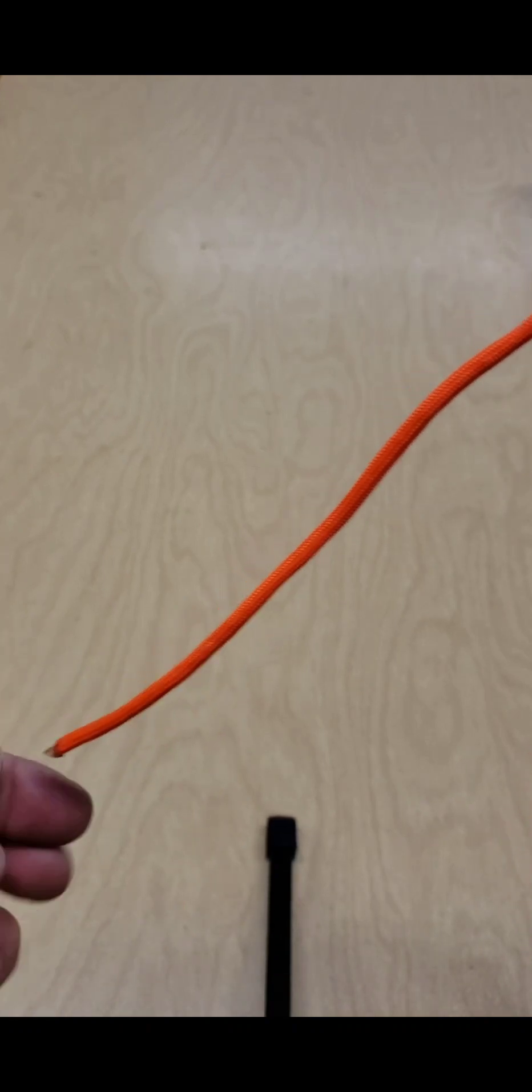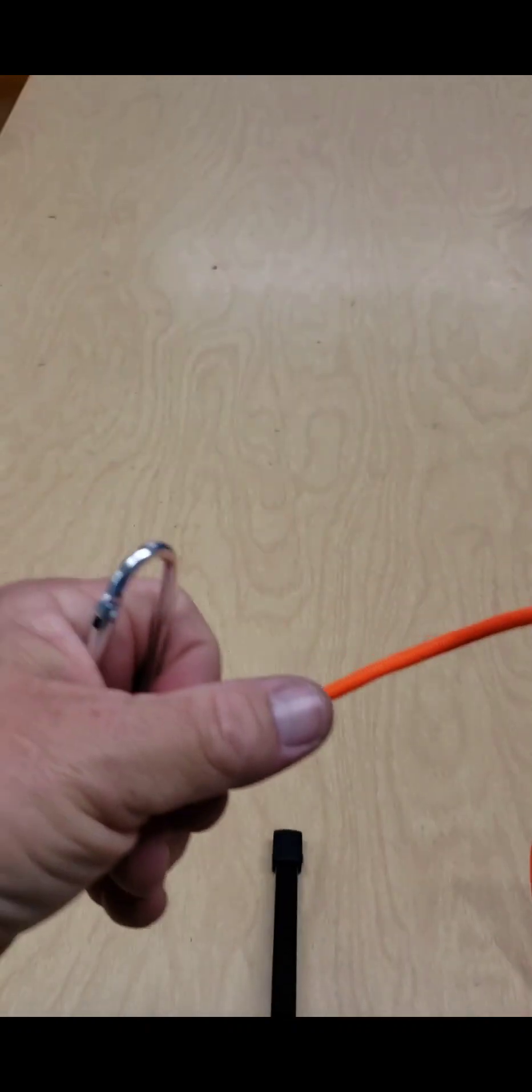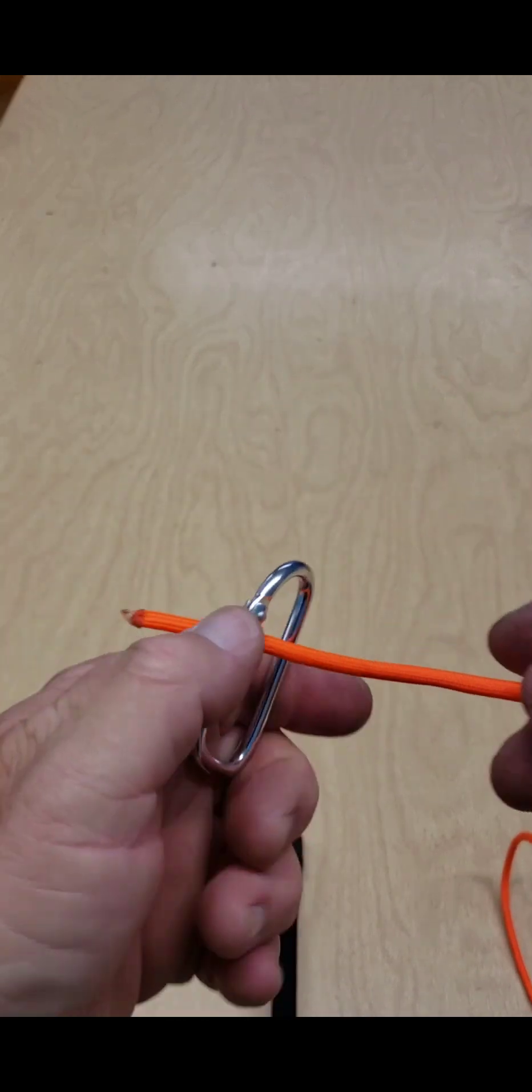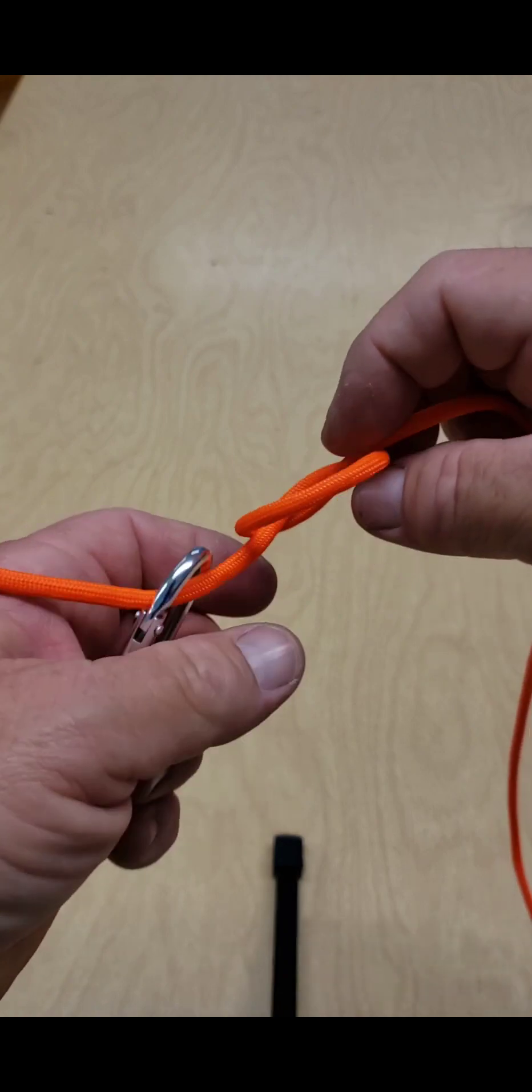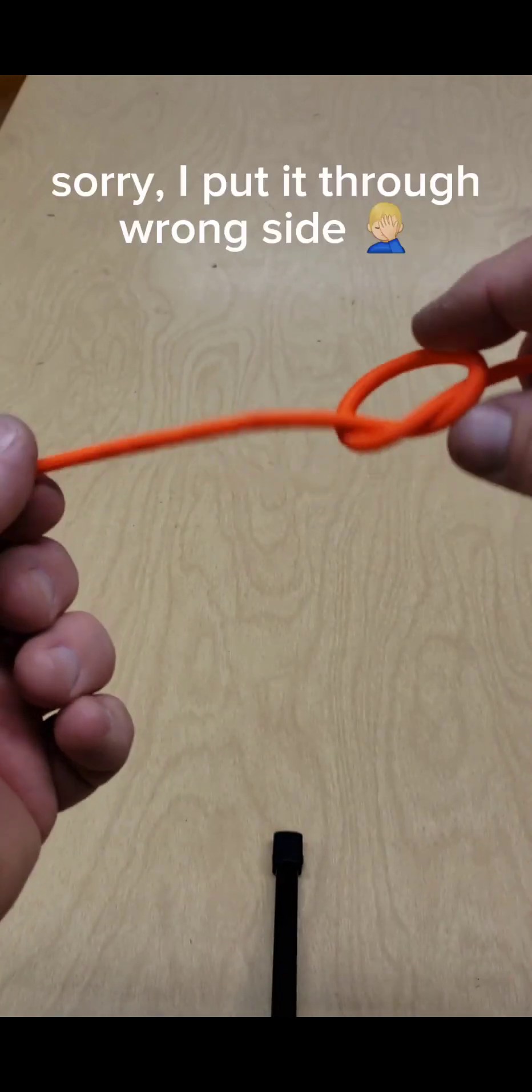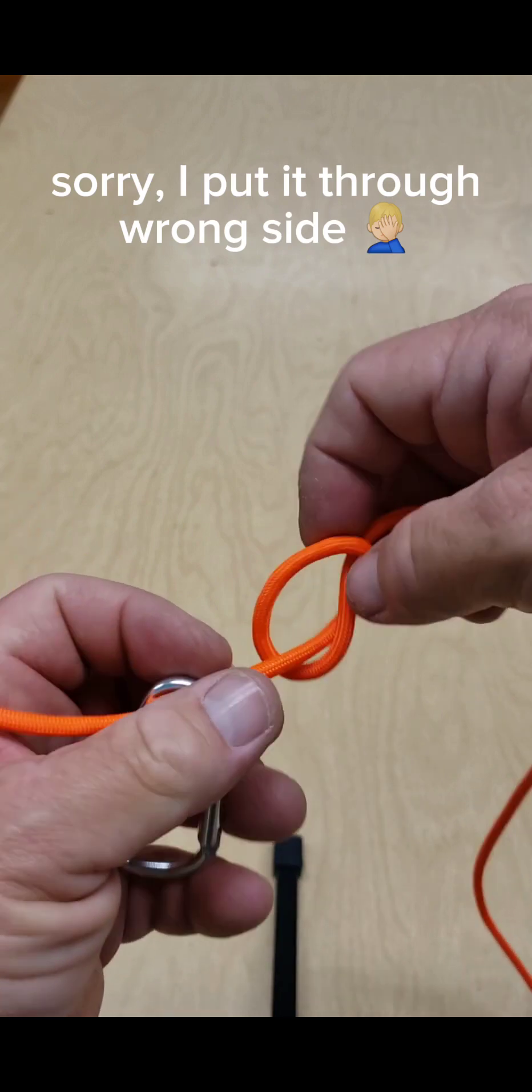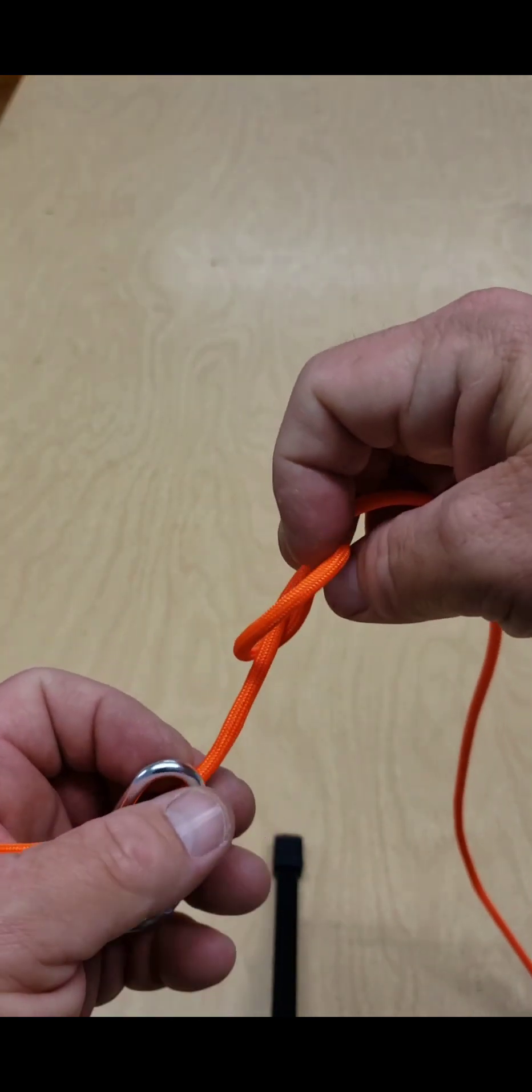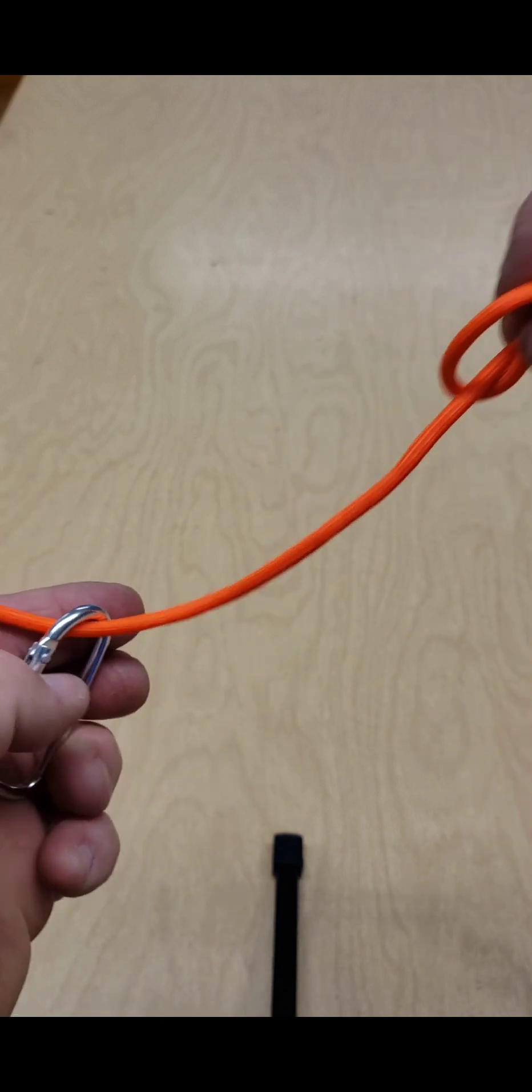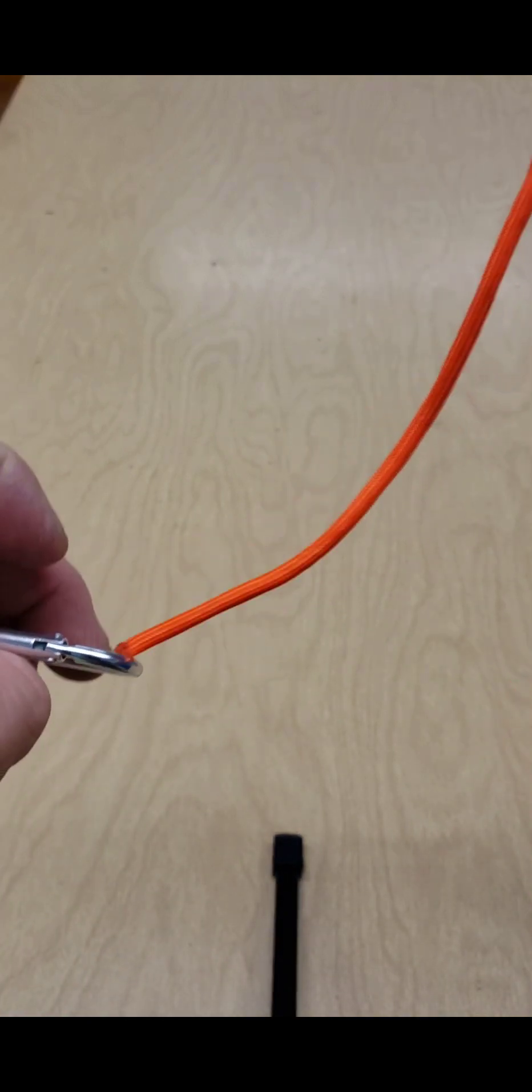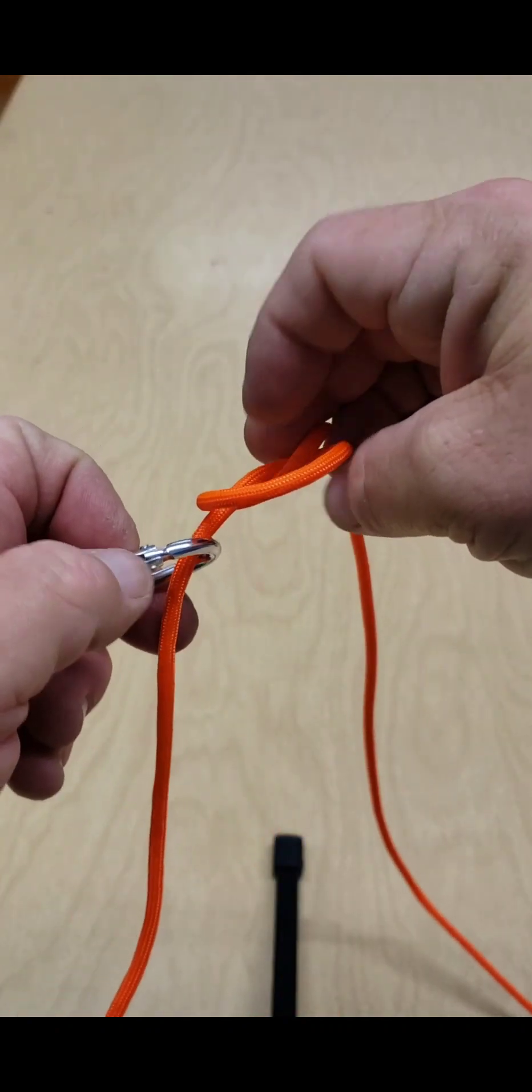Next thing you're going to do is take your jig side. Slide that bad boy through there. You have your loop side, so you have your up and your down. Right through that one. Pass it through like that.